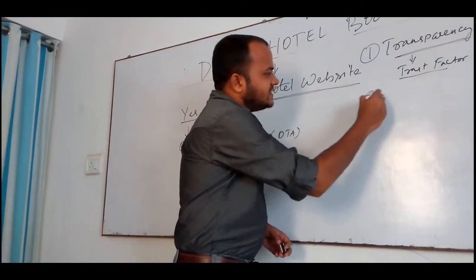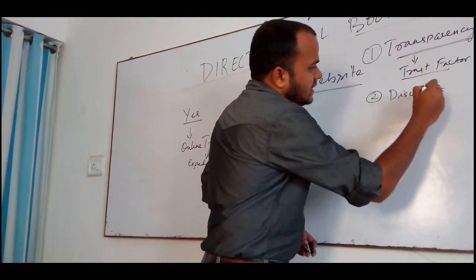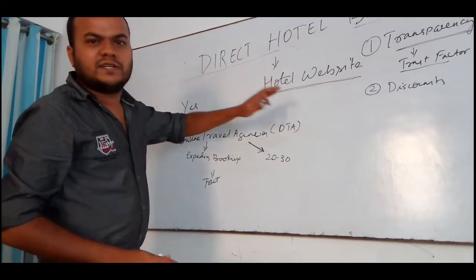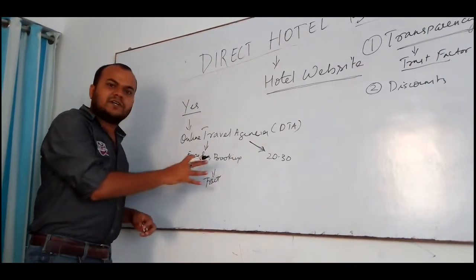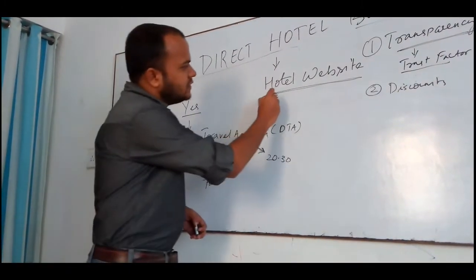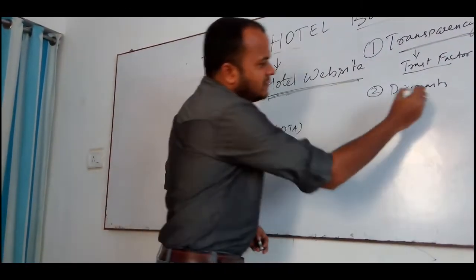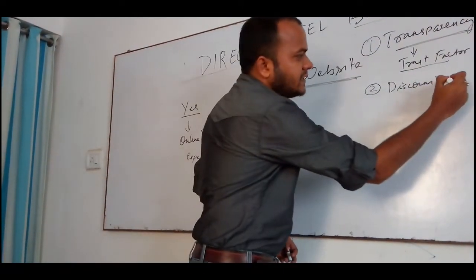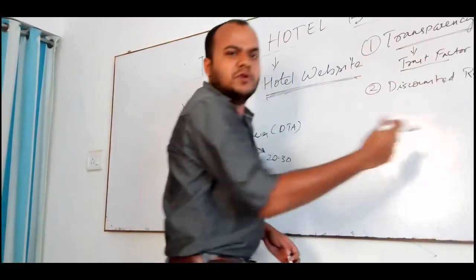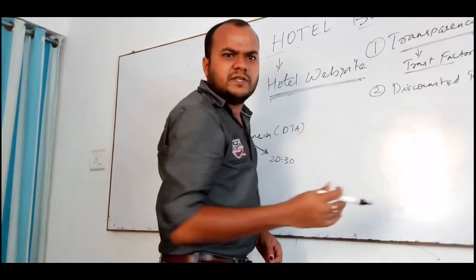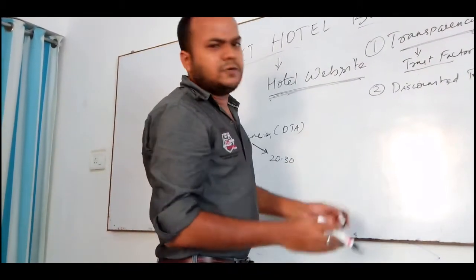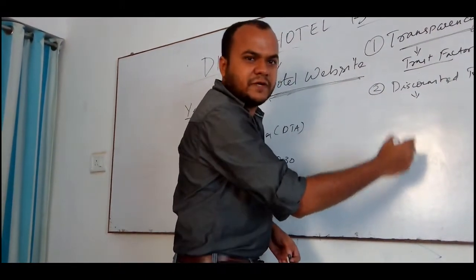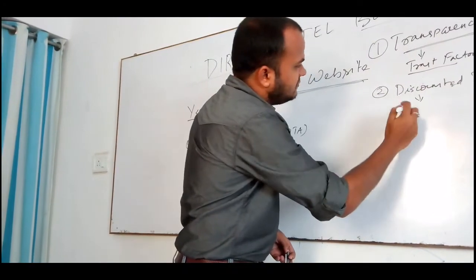The next advantage is discounts. When a hotel has its own website, it has control over that website and can control the room rate. It can offer a discount at any time it wants. In the case of an OTA, the hotel does not have control over its own listing. But with a direct booking website, a returning visitor can avail of discounts whenever the hotelier finds it appropriate.